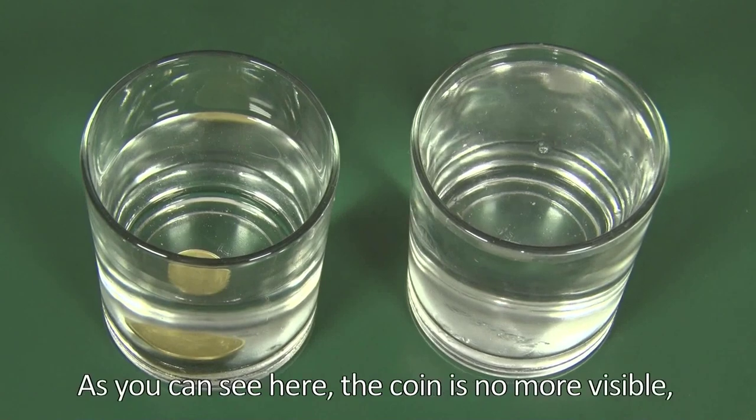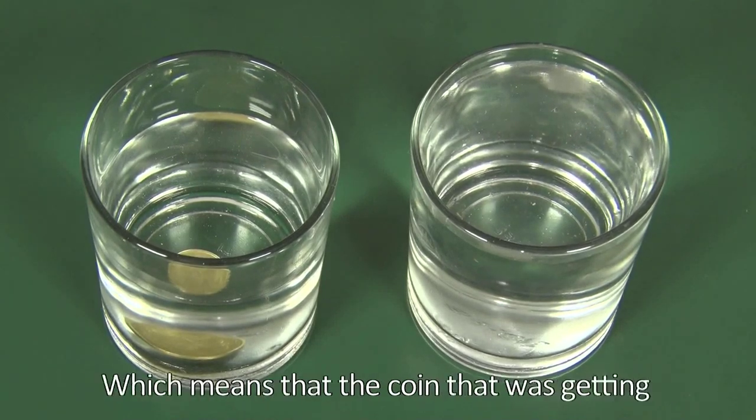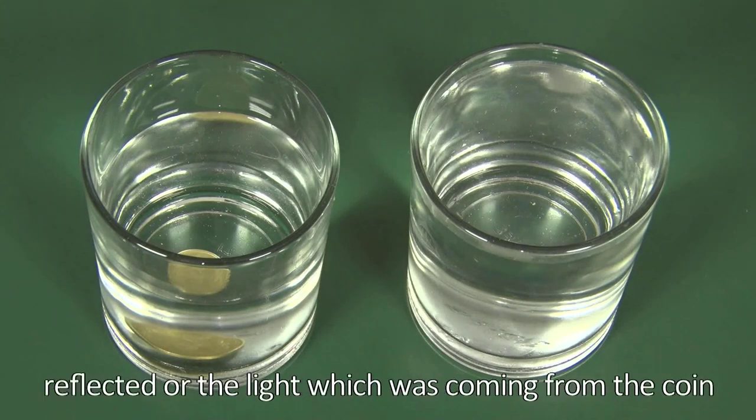So as you can see here, the coin is no more visible, which means that the light coming from the coin is getting reflected beyond the critical angle.